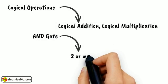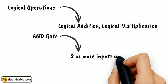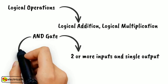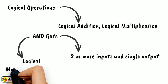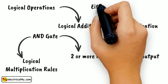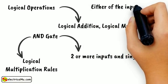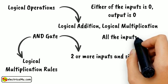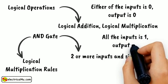AND gate is a logical gate which is widely used, having two or more inputs and a single output. This gate works or operates on logical multiplication rules. In this gate, if either of the inputs is low or zero, then the output is also low. But if all the inputs are high or one, the output will also be high or one.